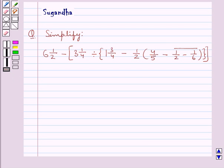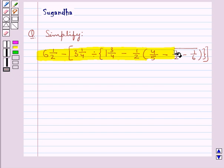Hello and welcome to the session. In this session we discuss the following question: simplify 6 and 1/2 minus 3 and 1/4, divided by 1 and 3/4 minus 1/2, multiplied by 4/5 minus 1/2 minus 1/6 under a bar.